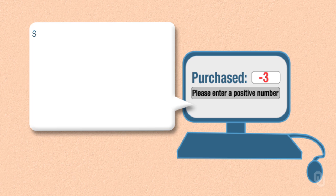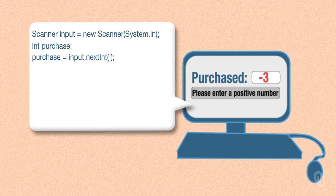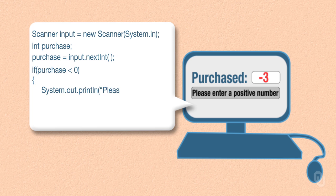Let's look at another example. Let's let a user re-enter the number of items they purchased if they select a negative number. To do this we'll create a scanner: Scanner input = new Scanner(System.in). Then we'll create a variable int purchase, and say purchase = input.nextInt(). If purchase is less than zero, we'll print 'Please enter a positive number' and then purchase = input.nextInt(). Notice this time the curly braces aren't optional because we have two things we want to do when the statement is true.